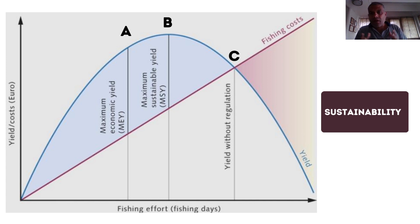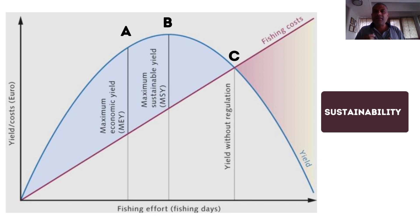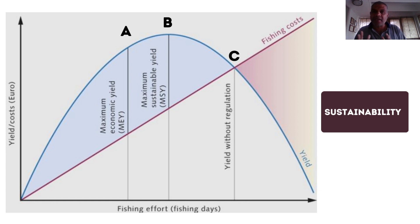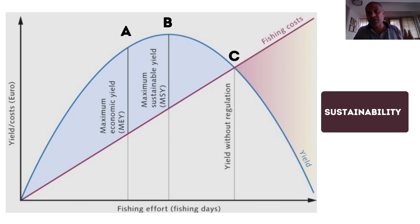Looking at fish yield, up to a certain level - let's call it point A, the maximum economic yield - every time we fish we pull out enough fish to give some profit but leave enough fish in the water so that the next time we come back the fish have had time to breed and grow. For example, if we have a school of 100 fish and we capture 30 to 40, the next time we come back we will find the population has replenished itself back to nearly 100.